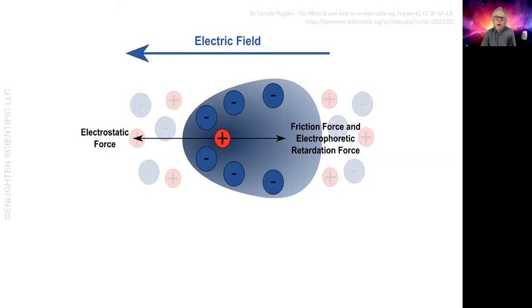If you apply an electric field using two electrodes, the particle will move towards the oppositely charged electrode. There will be a balance between the force trying to move it towards the electrode—the electrostatic force—and the friction force.